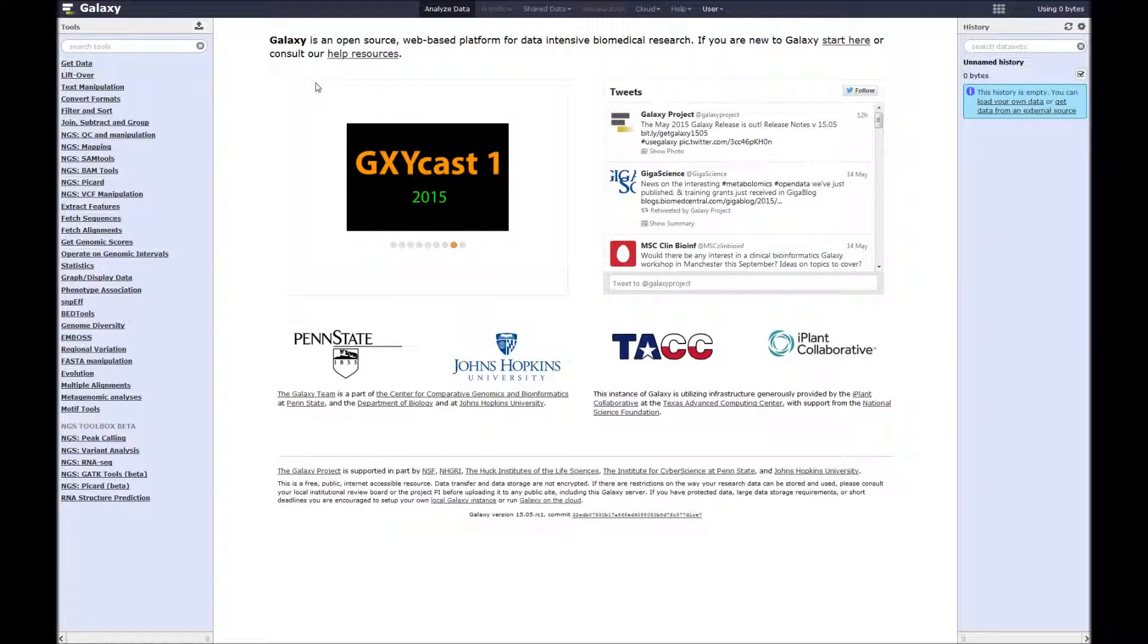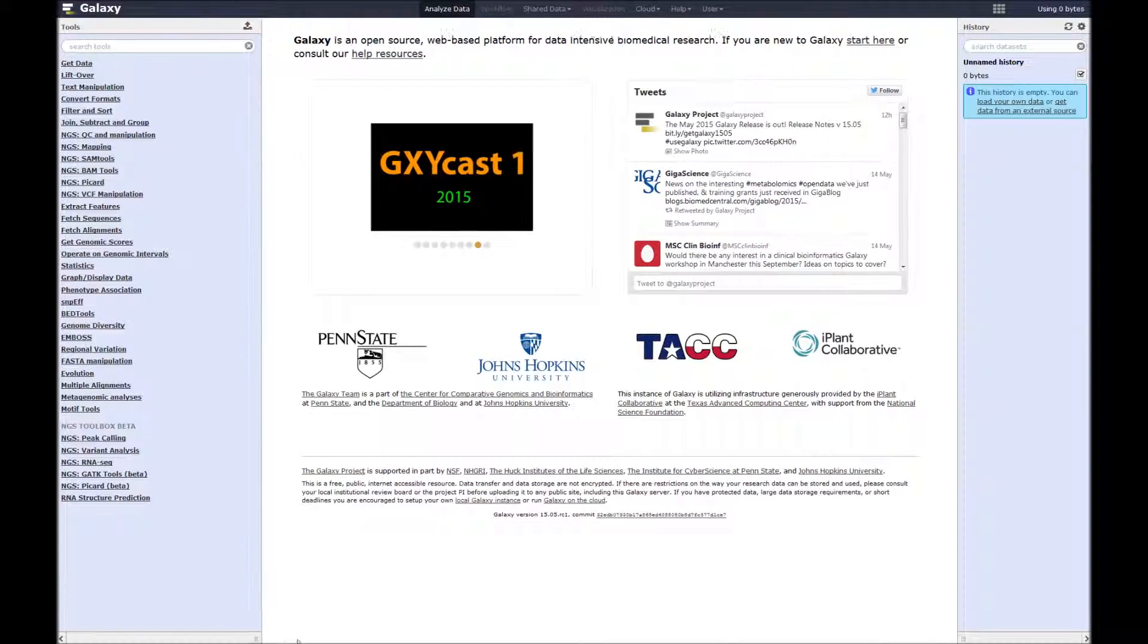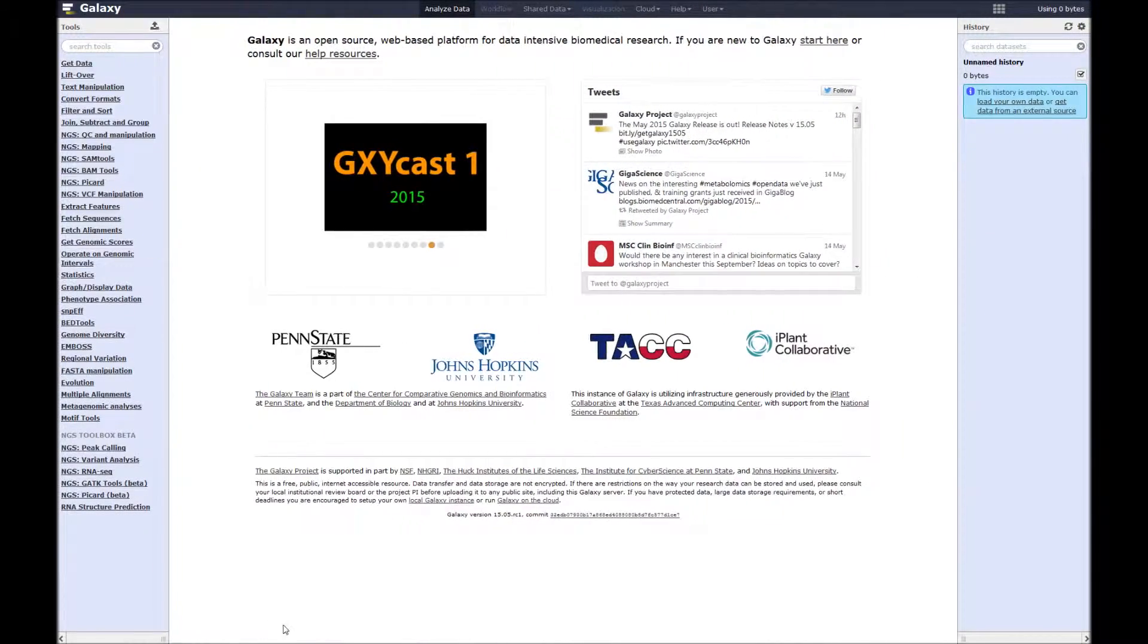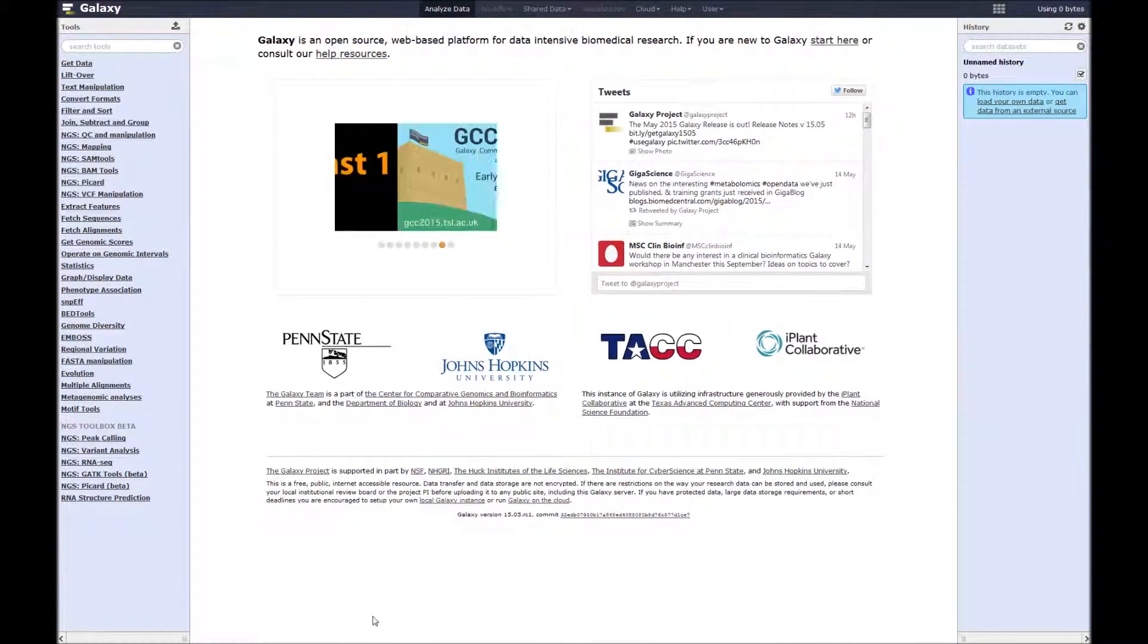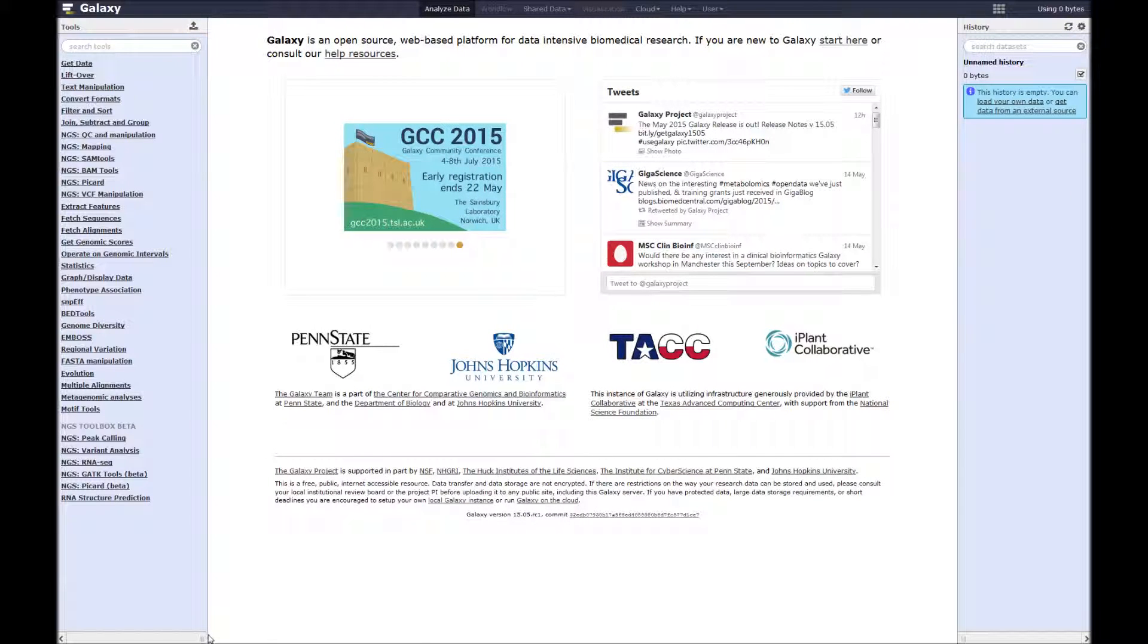There are three main areas. You've got the tools menu on the left. These different parts of the screen you can click and hold and drag to make them bigger or smaller. You have the results viewer in the middle. And then on the right hand side you've got the history where your data files and results appear as you work through a workflow.